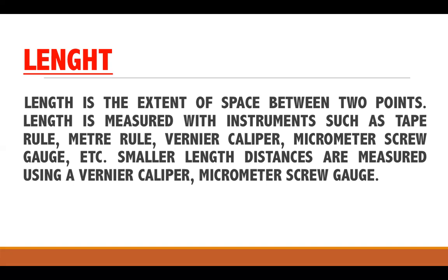Smaller lengths are measured using a Vernier caliper. If you're looking at the internal diameter or external diameter of a cylinder, what you want to use is your Vernier caliper. Also, if you're looking at the thickness of a paper, for example, what you want to use is a micrometer screw gauge.